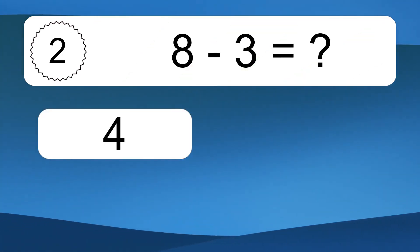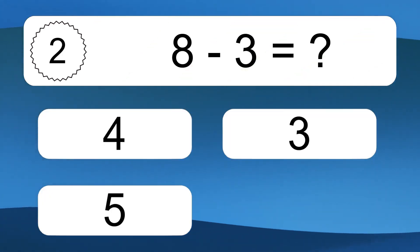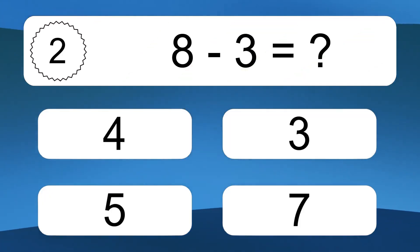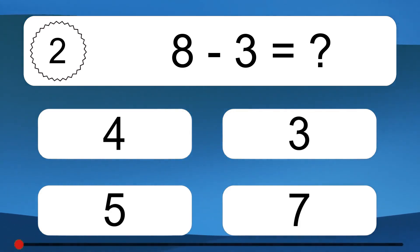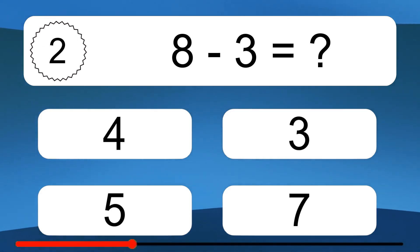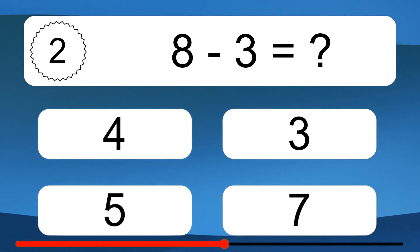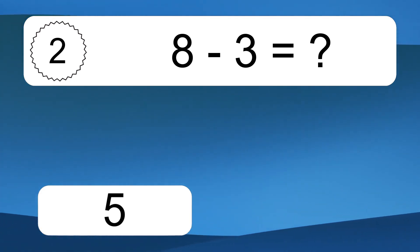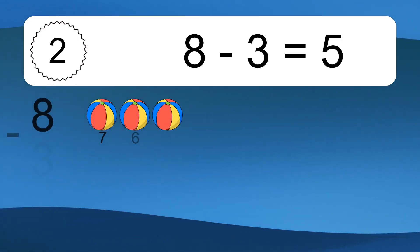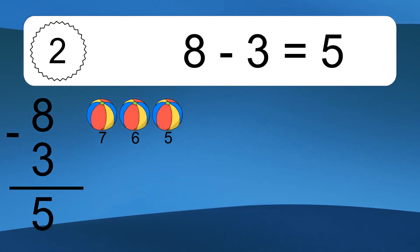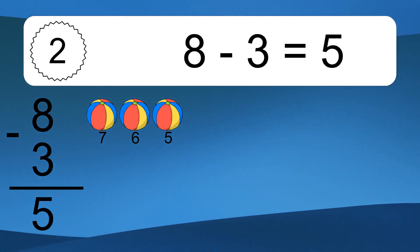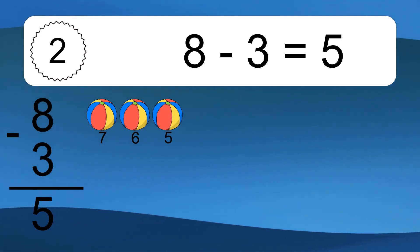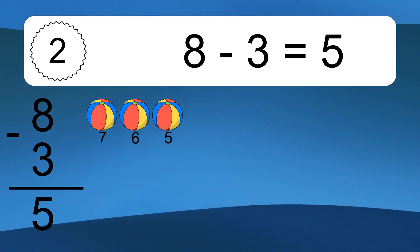8 minus 3 equals what? 8 minus 3 equals 5. Let's count it: 7, 6, 5.